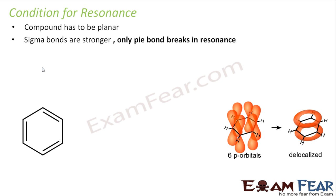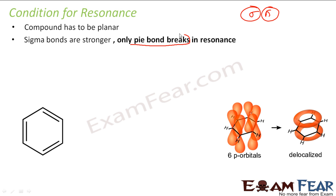Sigma bonds are stronger, so only pi bonds break in resonance. If you compare sigma and pi bonds, sigma is a strong bond and pi is weak. So in resonance, only pi bonds break — sigma bonds never break in resonance. For resonance, you don't need any reagent or solvent; benzene will always show resonance even when stable. You only break weak bonds, i.e., pi bonds.